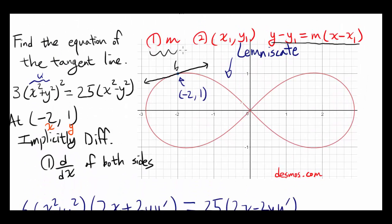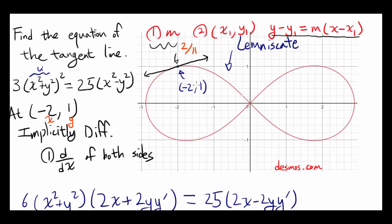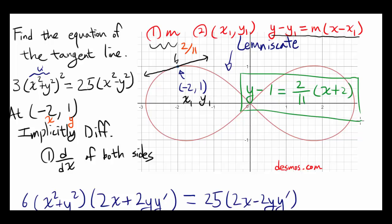So the slope is 2 over 11. For the point, we already know that (negative 2, 1) is on the line, so x1 equals negative 2 and y1 equals 1. The equation of the tangent line is: y minus 1 equals (2 over 11) times (x minus negative 2), or x plus 2. That is the final answer.